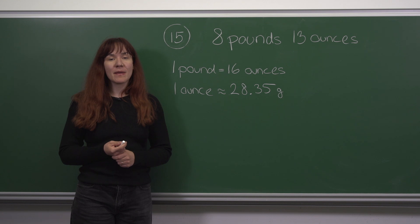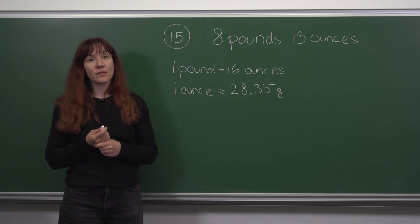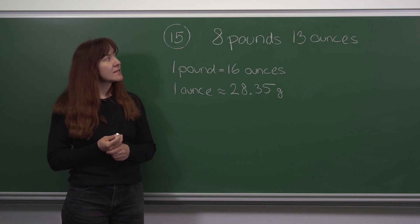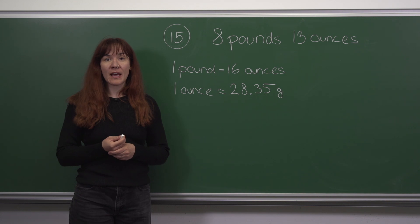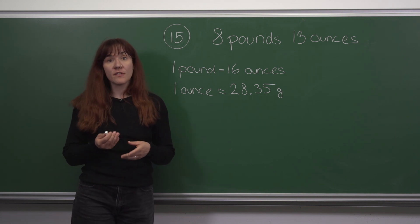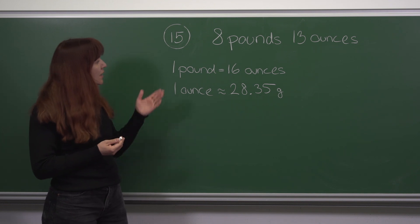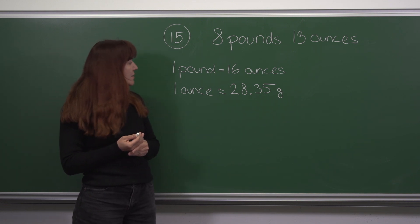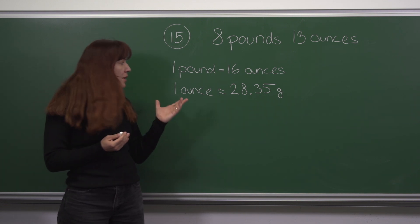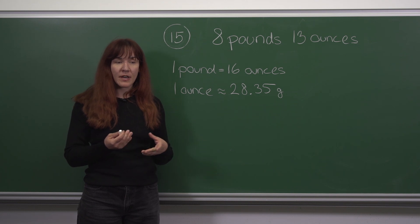This question concerns Jill's baby who was born in a hospital and her weight was measured in imperial units. She weighed 8 pounds and 13 ounces. We are asked to convert this into kilograms, and we are given some useful conversion information: one pound equals 16 ounces, and one ounce equals approximately 28.35 grams.